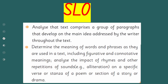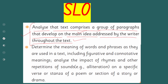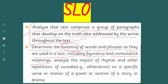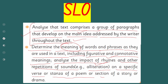Now let's see and understand our student learning outcomes. There are basically two SLOs. For recalling, we have already gone through the main idea in previous videos. The first SLO is to analyze that a text comprises a group of paragraphs that develop on the main idea addressed by the writer throughout the text. The second is to determine the meaning of words and phrases as they are used in a text, including figurative and connotative meanings, and to analyze the impact of rhymes and other repetitions of sounds — for example, alliteration — on a specific verse or stanza of a poem, or section of a story or drama.